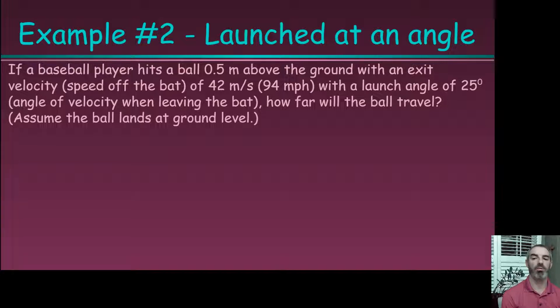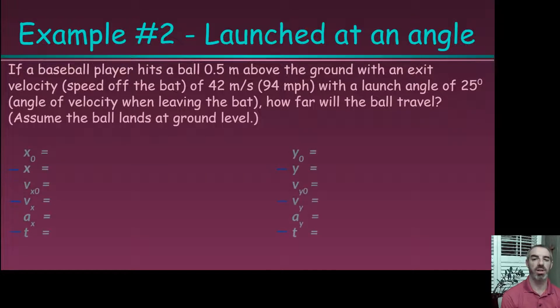The ball is hit half a meter off the ground at 42 meters per second, which is approximately 94 miles per hour, at a 25 degree angle. We're going to follow the steps: list our variables — the six variables — and separate them, with horizontal on one side and vertical on the other.